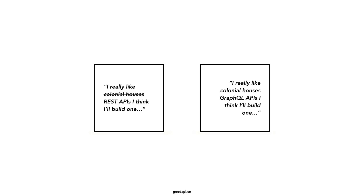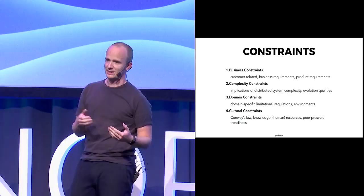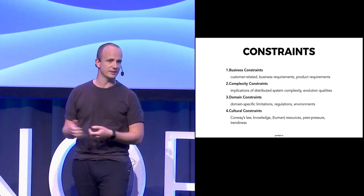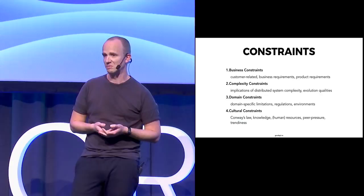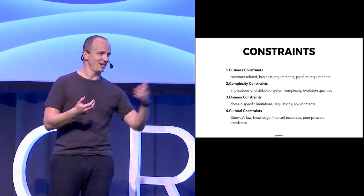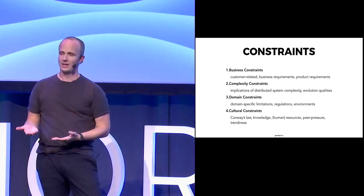There are four areas of constraints. First, business constraints: what your product is, what it has to fulfill, what are the tasks, what are the use cases and customer-related requirements. If your customers only know how to process a CSV file, good luck convincing them to consume GraphQL. If they don't understand REST or HTTP or GraphQL, you might have a hard time moving them to that. So that also constrains what you can do.